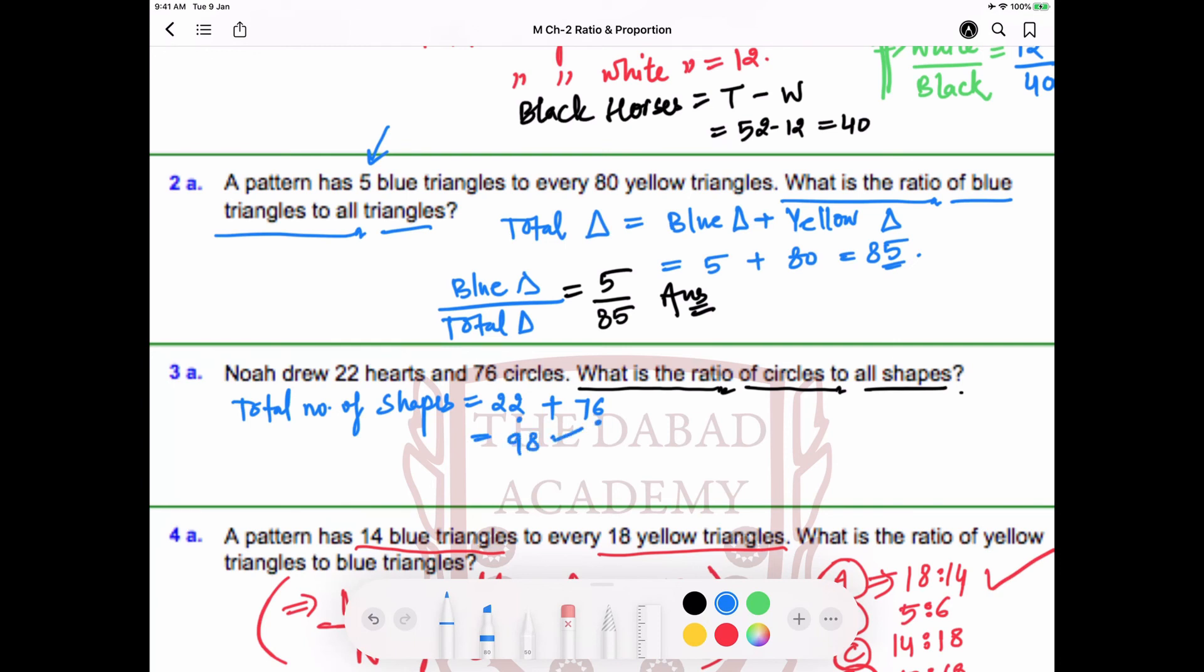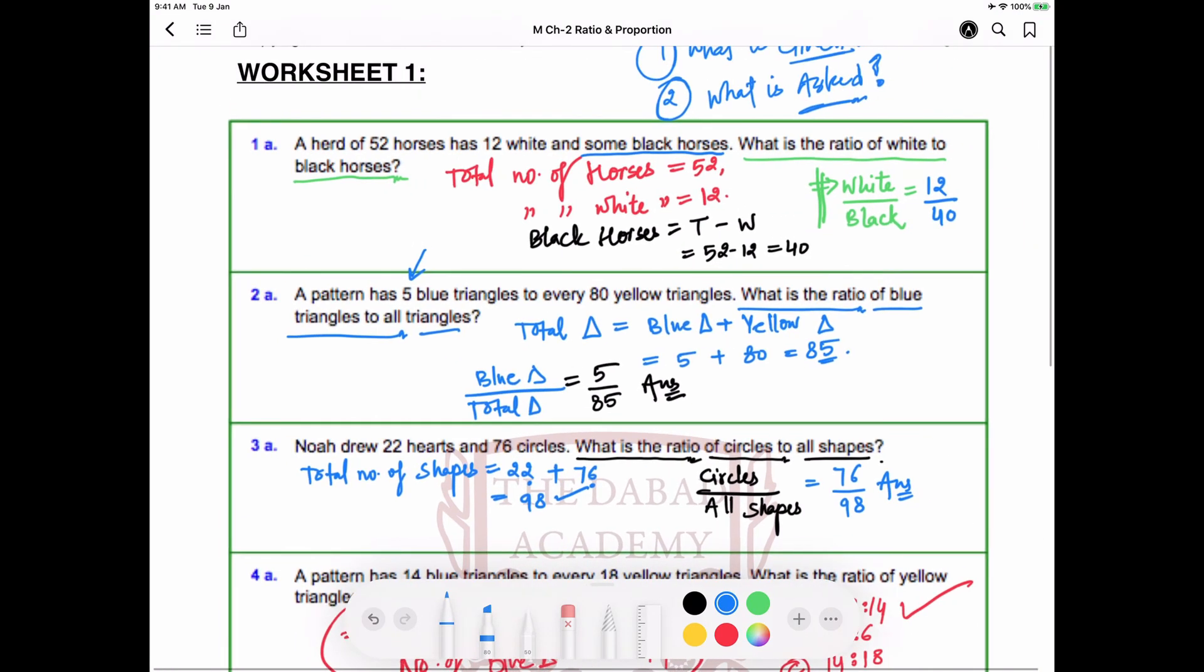For the ratio, if circles is given first, then in the numerator we have circles and in the denominator all shapes. So the answer is 76 divided by 98. That's all. I think these were very easy.